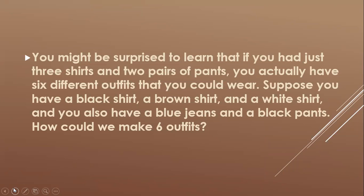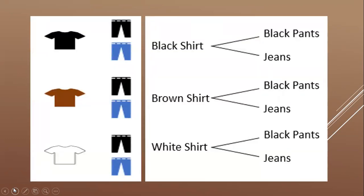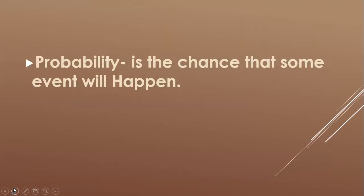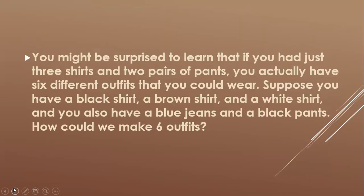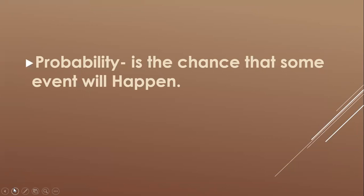You might be surprised to learn that if you had just three shirts and two pairs of pants, you actually have six different outfits that you could wear. Suppose you have a black shirt, a brown shirt, and a white shirt, and you also have blue jeans and black jeans. How could we make six outfits? We have three shirts, black pants, and blue jeans.